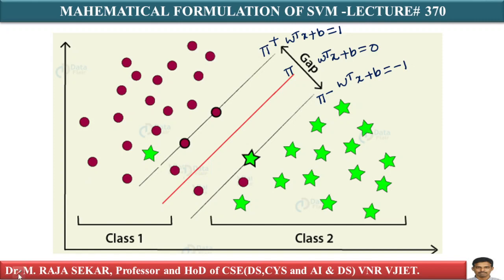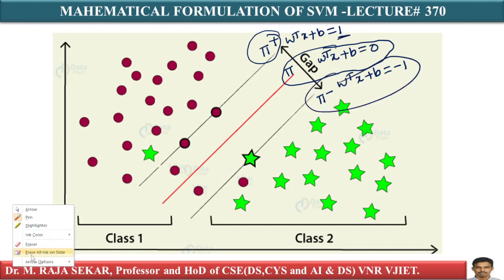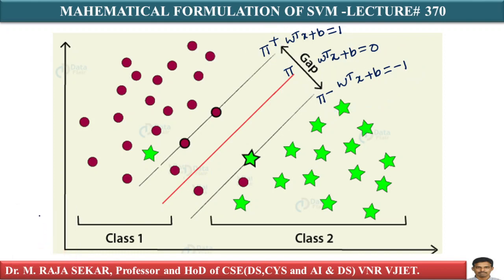What is this plane? This plane is π. What is the equation of the plane? W transpose X plus B equal to 0. This is π plus: W transpose X plus B equal to 1. This is π minus: W transpose X plus B equal to minus 1.